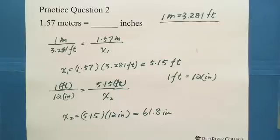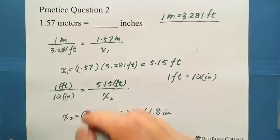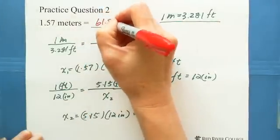Equals 61.8 inches. So the answer 1.57 meters equals 61.8 inches.